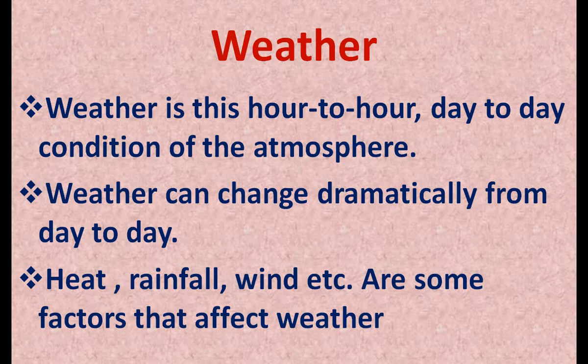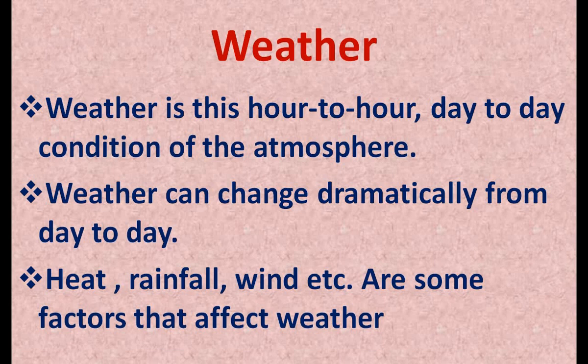The second layer is the stratosphere, which lies just above the troposphere and has a thickness of about 50 km. This layer is free from clouds and all weather-related phenomena, and it has a rich layer of ozone which protects us from the harmful ultraviolet rays of the sun. The third layer is the mesosphere, which stretches from 50 km to 80 km above the stratosphere, and in this layer materials are burnt.